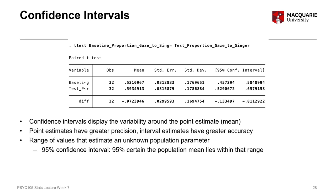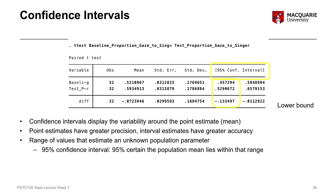Confidence intervals have an upper bound and a lower bound, and between those two bounds we think we're 95% certain that the population mean lies somewhere within that range. It's called a 95% confidence interval because we're 95% certain that the real mean score in our population lies somewhere between 0.457 and 0.584. The top number is called the upper bound and the bottom number is called the lower bound.